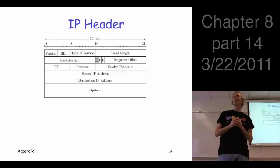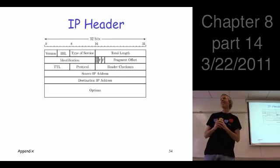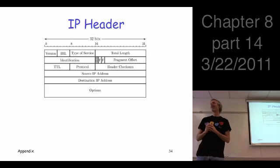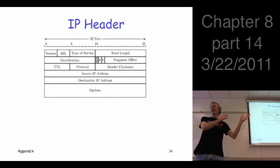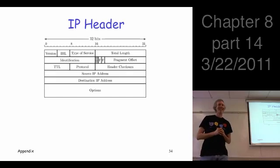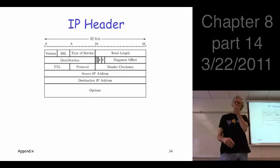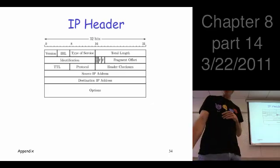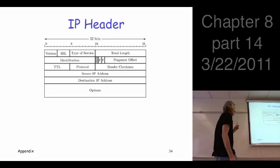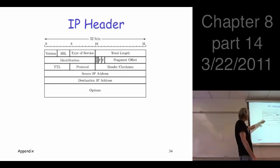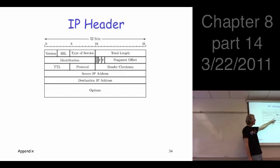Well, if someone does their routing incorrectly, you'd probably get to 255 pretty fast. So we've got TTL, source and destination, and so on and so forth.